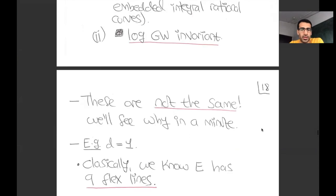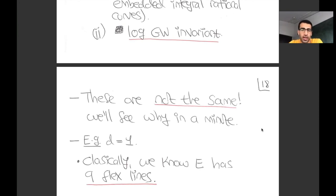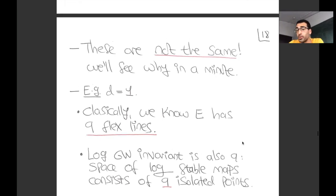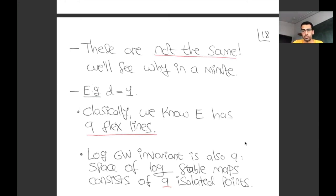Let's start with degree one. A smooth cubic in the plane has exactly nine flex lines—lines that only intersect the cubic in a single point. There are precisely nine flex lines; this is a nice exercise involving line bundles on elliptic curves. In this simple case, the log Gromov-Witten invariant is also nine: the moduli space of log stable maps consists of nine isolated points, each parameterizing a morphism from P1 into P2 whose image is one of the flex lines.